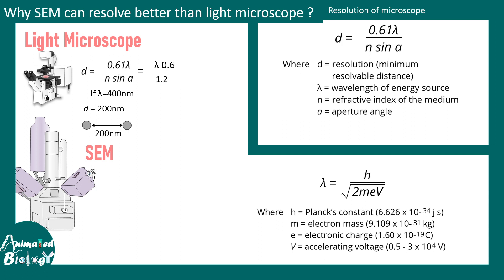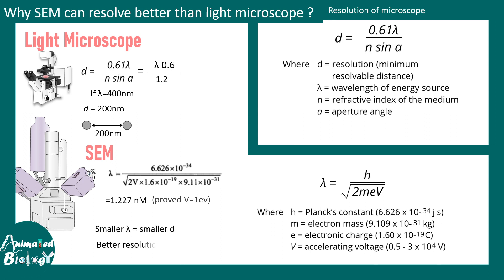In the case of SEM, the wavelength of the electron is much smaller, and this is a function of the accelerating voltage provided — greater the voltage, lesser is the wavelength. Putting in the values at an accelerating voltage of 1 eV, the wavelength lambda comes out to about 1.2 nanometers. So you can understand: if the wavelength is smaller, the resolution would be much better. This is why the scanning electron microscope has much better resolution compared to a light microscope.